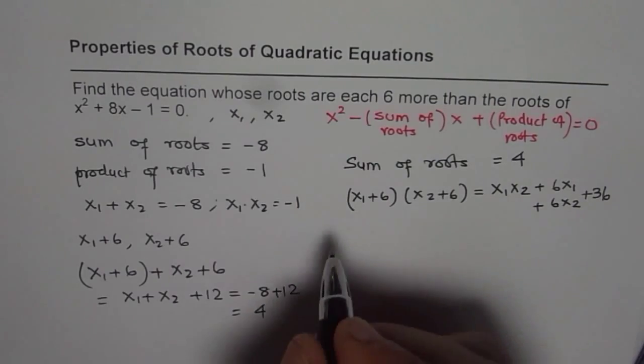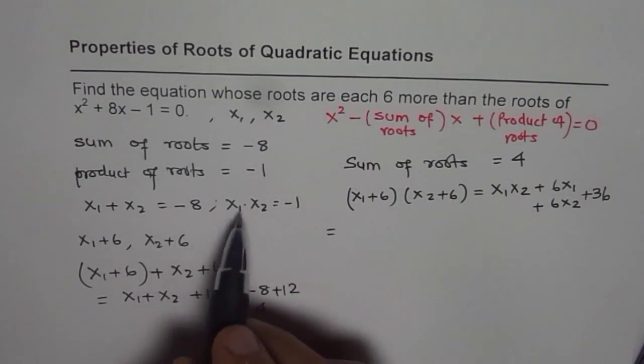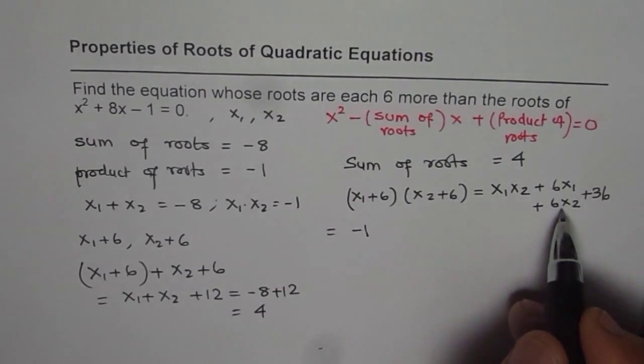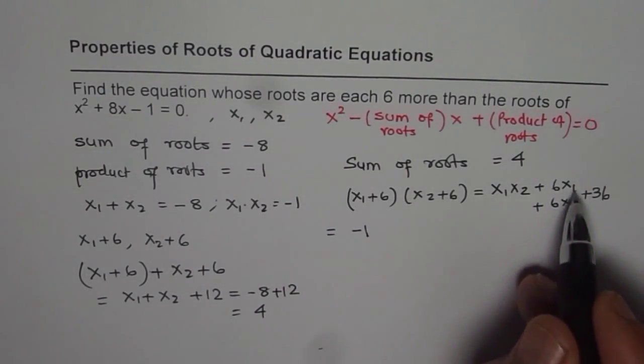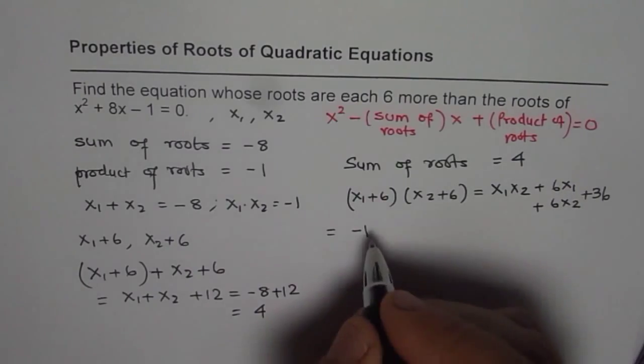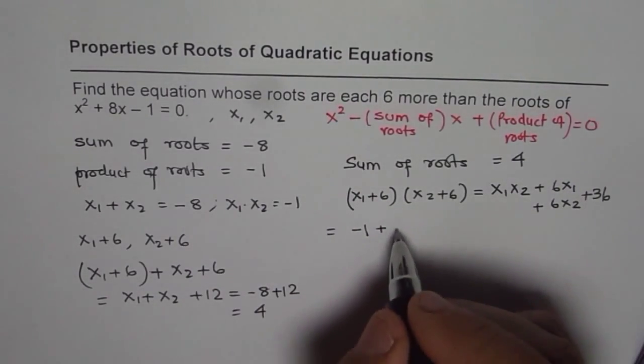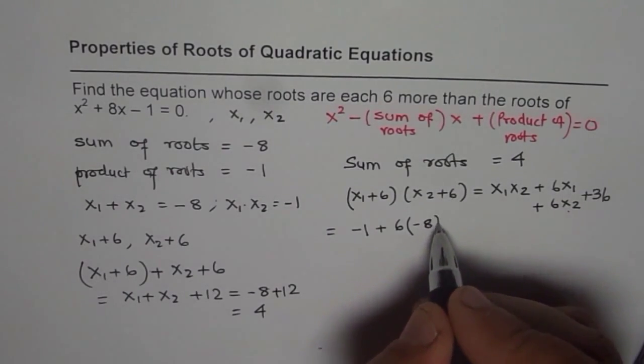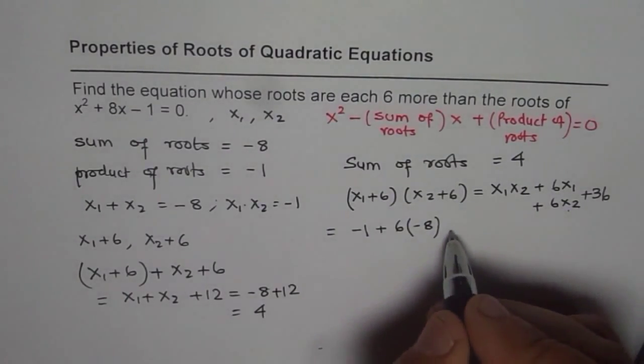So x₁ and x₂ is how much? The product x₁x₂ is -1. So I will replace x₁x₂ by -1. 6 times we can take common x₁ and x₂ which is sum. So what we get here is +6 times the sum of x₁ and x₂ which is -8, plus 36.